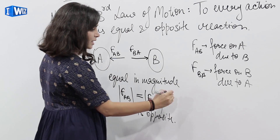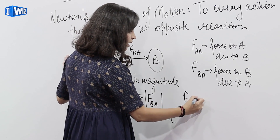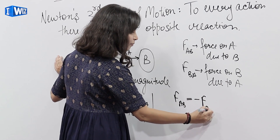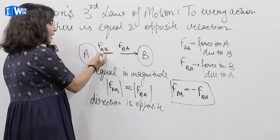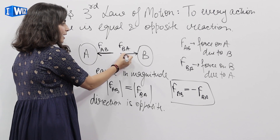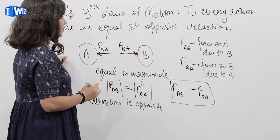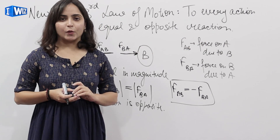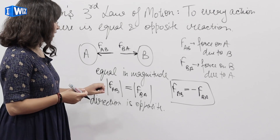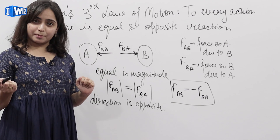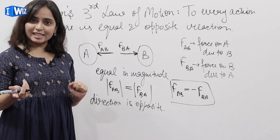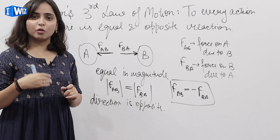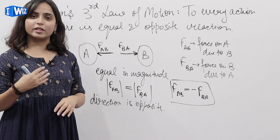That means magnitude of both the forces are equal and direction is opposite. That means F of AB is equal to negative of F of BA. अगर F of AB की direction ये है तो BA की उसके opposite — equal and opposite reaction. तो ये है Newton's 3rd law. अब बात आती है — अगर ये equal है और opposite है तो they should cancel each other. लेकिन ये forces cancel नहीं करती हैं क्योंकि they are acting on two different bodies.